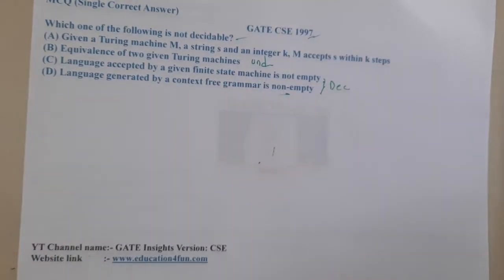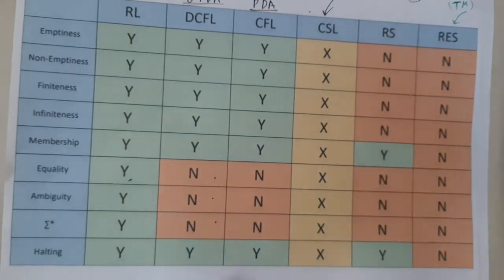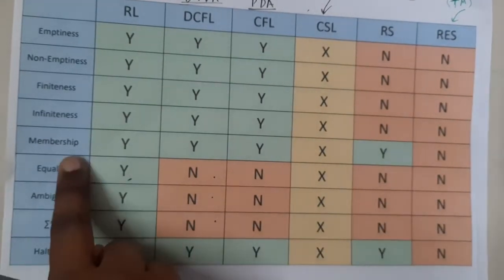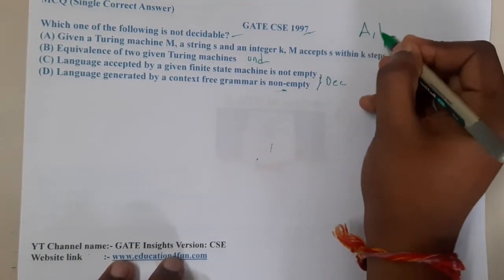When it comes to option A, it's a bit confusing. They are saying: given a Turing machine M, a string s, and an integer k, M accepts within k steps. To be clear, when we are talking about halting with respect to Turing machines, we cannot decide. Membership also we cannot decide. Basically, I think both of these are undecidable. So A and B are the answers.